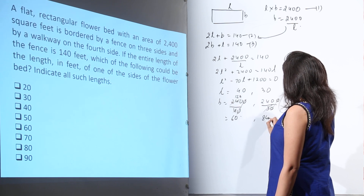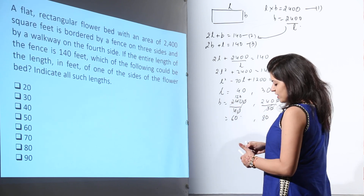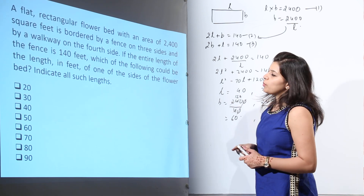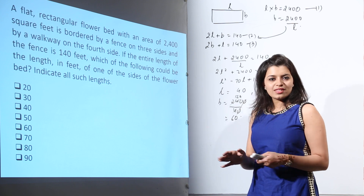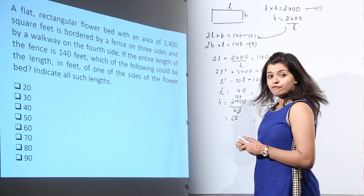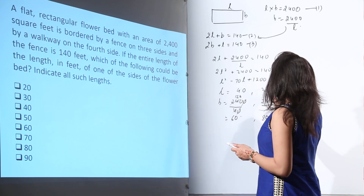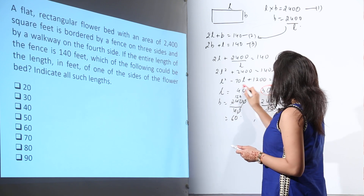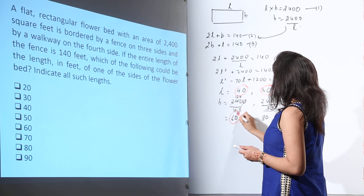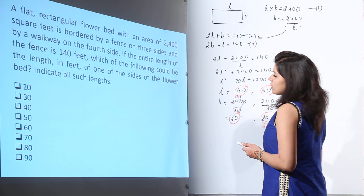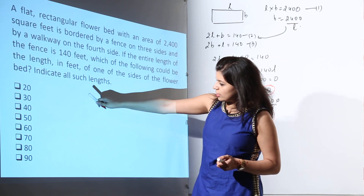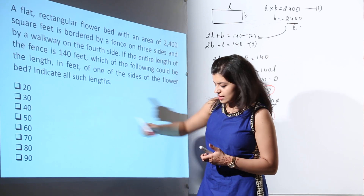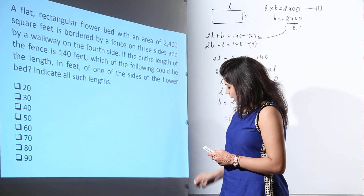So we can say that all the possible values of the lengths of this particular flower bed are 30, 40, 60, and 80, giving us answer options 30, 40, 60, and 80.